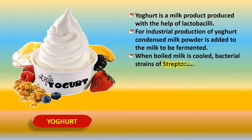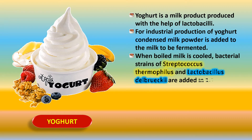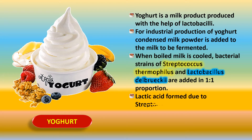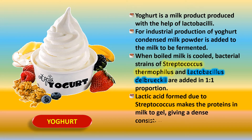When boiled milk is cooled, bacterial strains of Streptococcus thermophilus and Lactobacillus delbrueckii are added in a one-to-one proportion — equal proportions of these two bacteria are added to the cooled milk. Lactic acid is formed due to Streptococcus, and that lactic acid causes the proteins in the milk to gel, giving a thicker or denser consistency to yogurt.